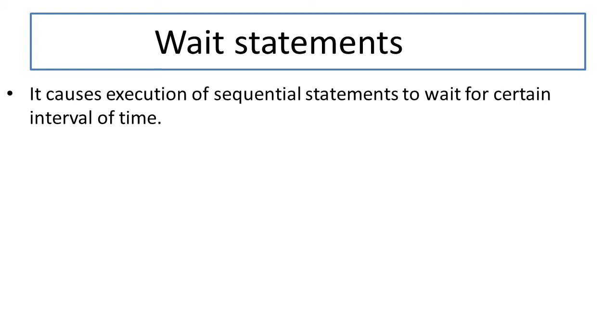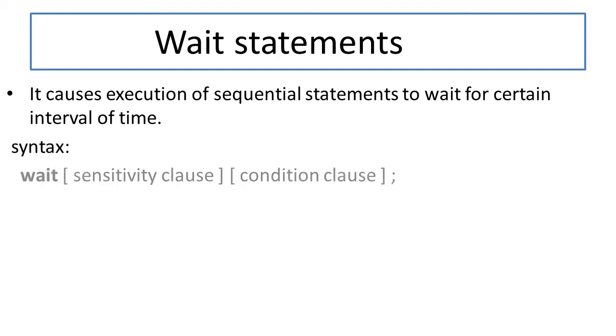Let's start with the wait statement. As the name indicates, it introduces a certain delay. It causes execution of sequential statements to wait for a certain interval of time — it simply delays operation for a certain amount of time. The syntax is: wait, followed by a sensitivity clause and a conditional clause in brackets.